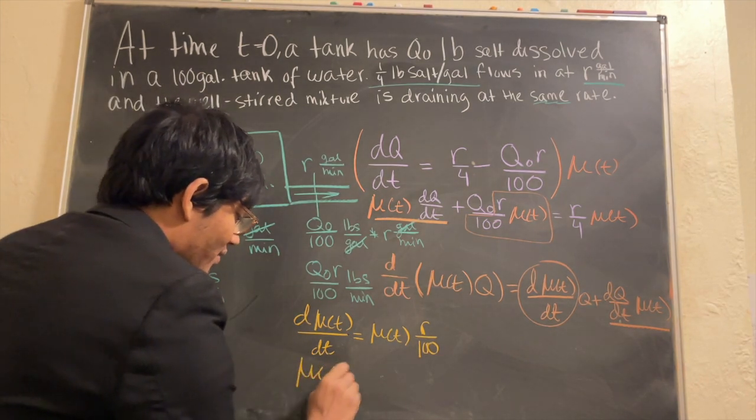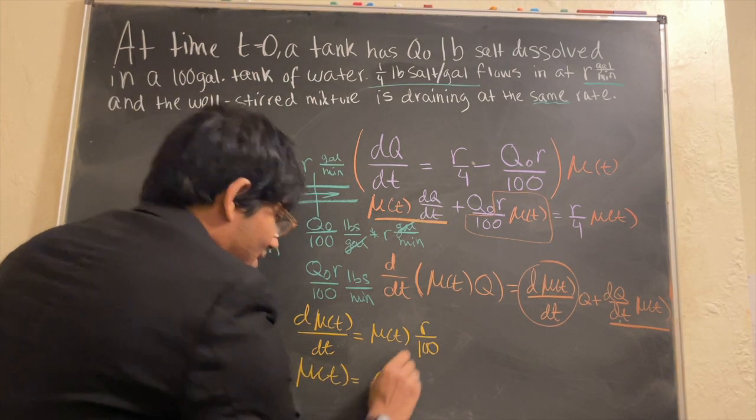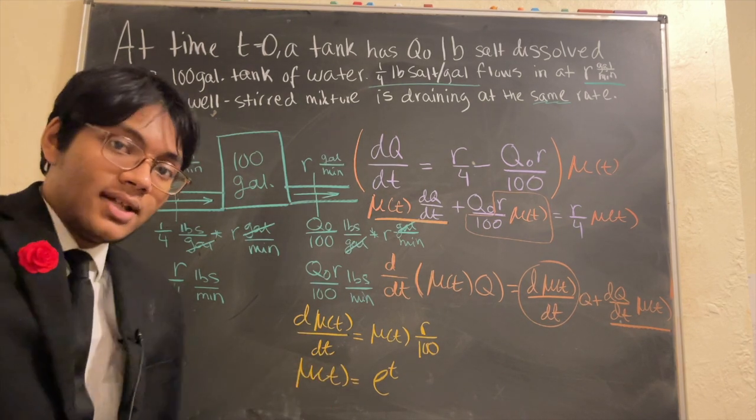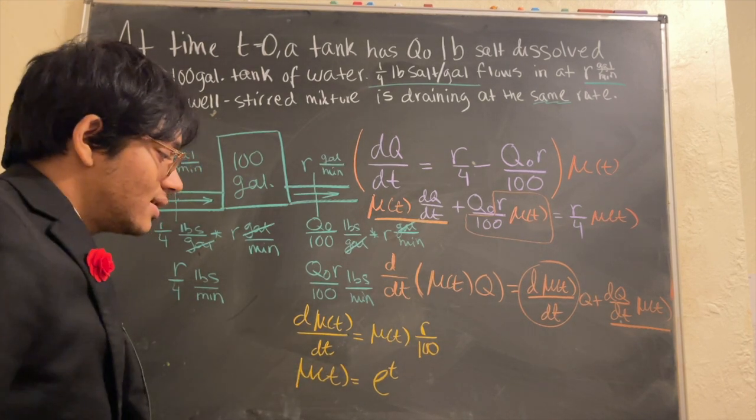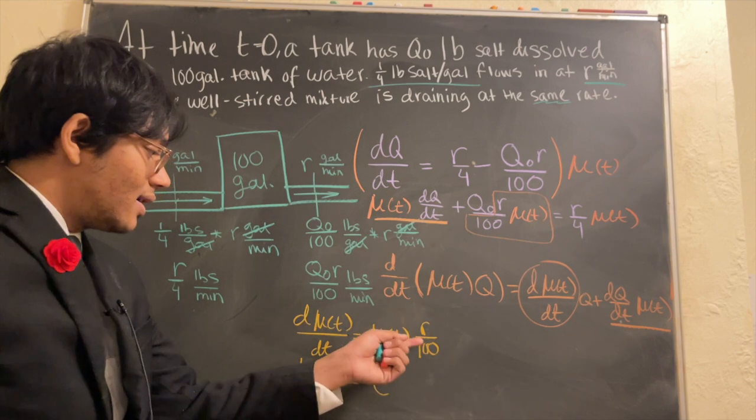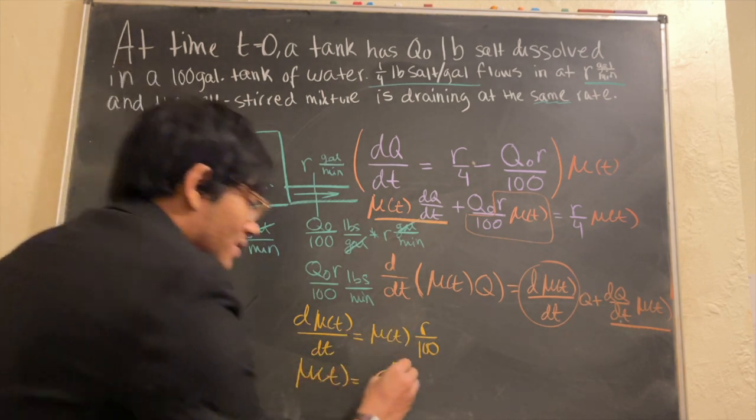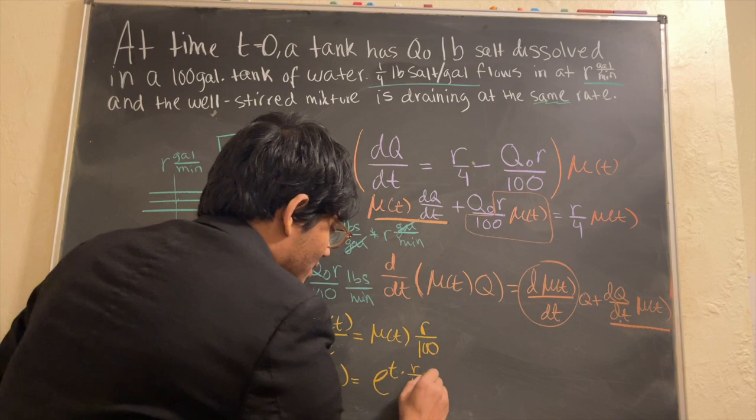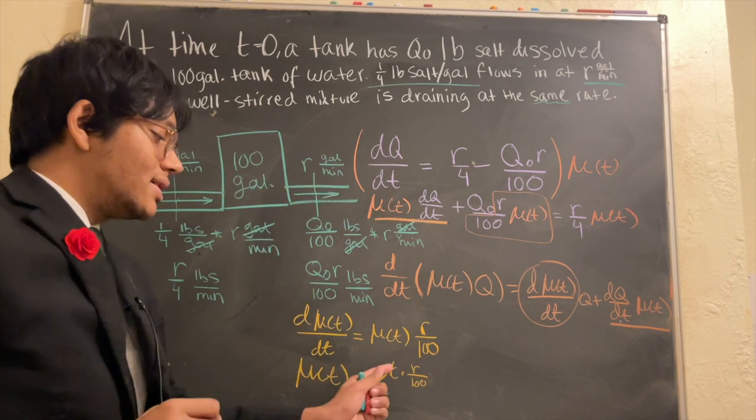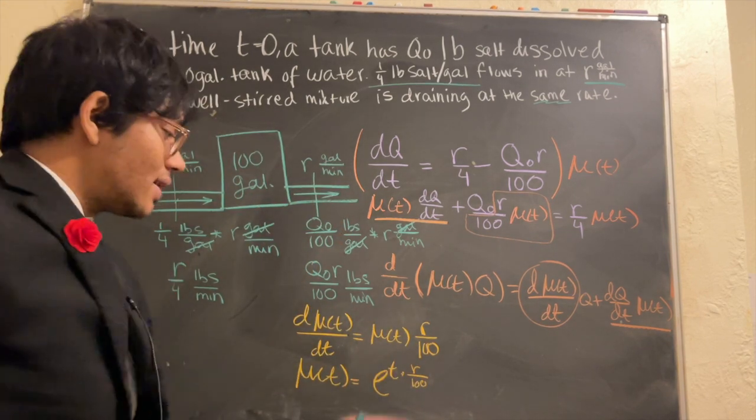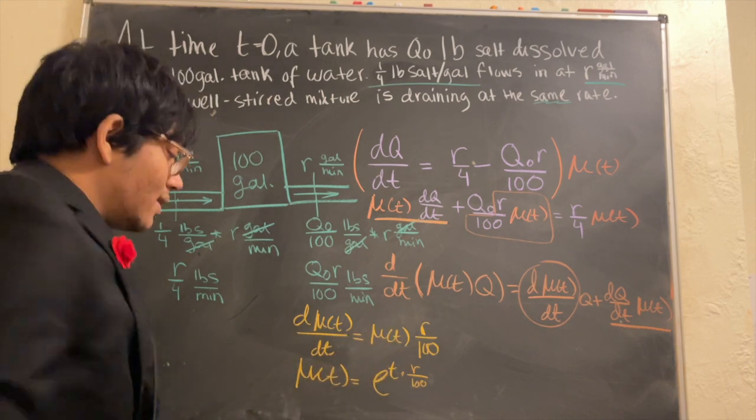Our integrating factor is none other than e to the t. But wait, if I differentiate e to the t, I'll get e to the t back. I won't get r over 100. So I'm going to have to multiply this by r over 100. So that when I differentiate e to the t times r over 100, I'll get this back.